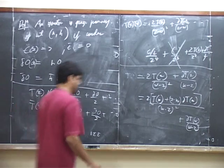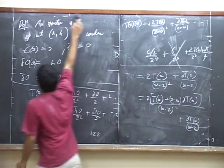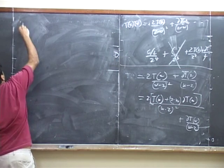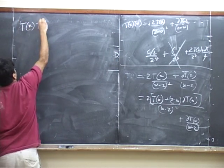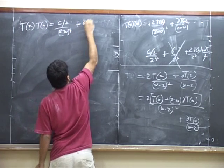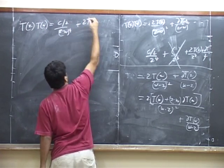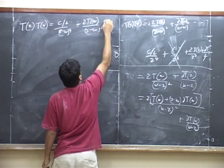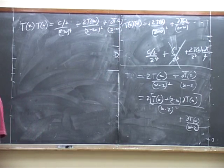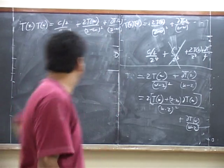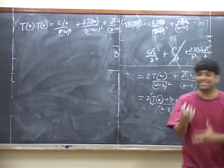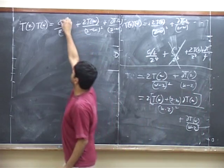Therefore we conclude that the most general singular part of the operator product expansion of the stress tensor with itself is: t of z t of w equals c by 2 over (z minus w) to the fourth plus 2t of w over (z minus w) squared plus del t of w over (z minus w). So from general principles, we have determined all the singular terms in the operator product expansion of the stress tensor with itself, up to one unknown constant c.